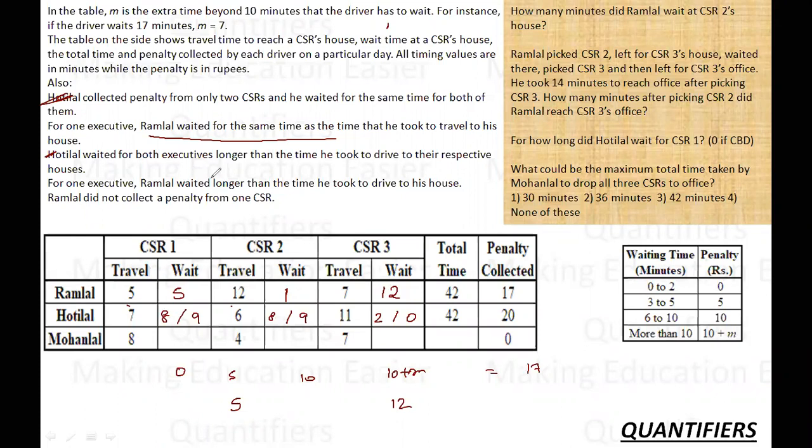For Mohanlal, no information is given. And the penalty collected is 0. So the waiting time can be 0 to 2, 0 to 2, and 0 to 2. So these are the possibilities. Let's read the questions. A pretty straightforward set as of now. How many minutes did Ramlal wait at CSR2's house? So CSR2 is here. Ramlal waited for 1 minute.